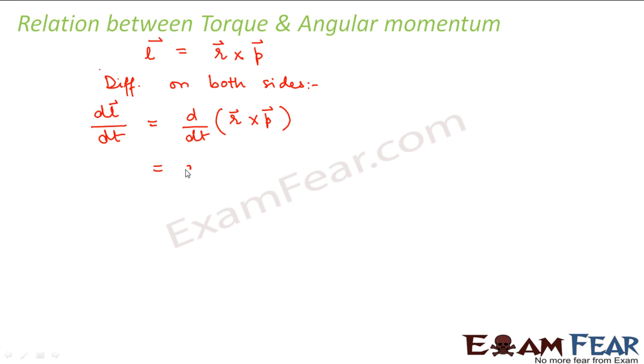We get dL by dt is equal to d by dt of R cross P. Now this can be written as, by property of differentiation on cross product, we know that this becomes dR by dt cross P plus R cross dP by dt. Now from where did I get all these? This is a rule for differentiation. If you want, you can check the lesson on differentiation in your mathematics videos. So now what is dR by dt, that is change of displacement with time, that is nothing but linear velocity. Right? So this becomes V cross P plus R cross dP by dt.